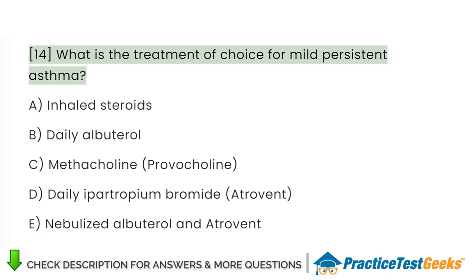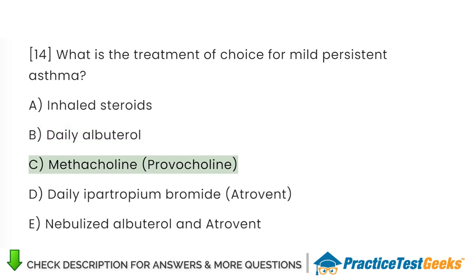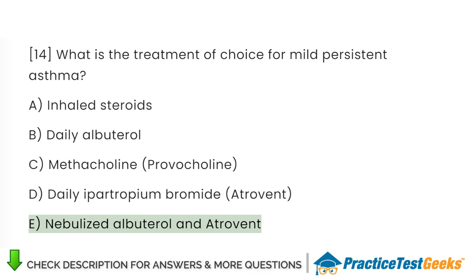What is the treatment of choice for mild persistent asthma? A. Inhaled steroids. B. Daily albuterol. C. Methacholine, Provocholine. D. Daily ipratropium bromide, Atrovent. E. Nebulized albuterol and Atrovent.